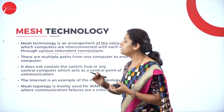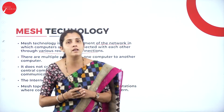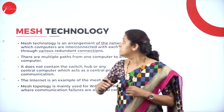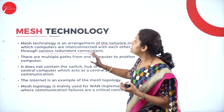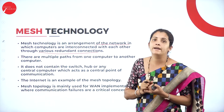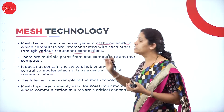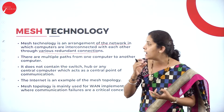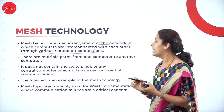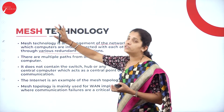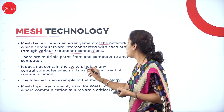In mesh topology, there are multiple paths from each device — that means more than one communication path from each computer. The mesh topology gives the physical representation of the computer system where all computers are connected through various redundant connections, with multiple paths from one computer to another. Mesh topology does not contain any switching devices like a switch or hub.